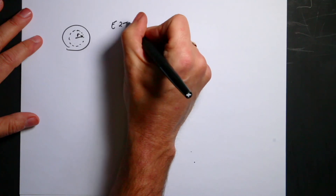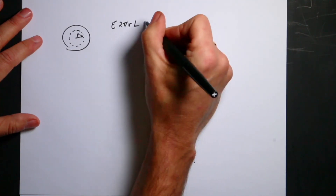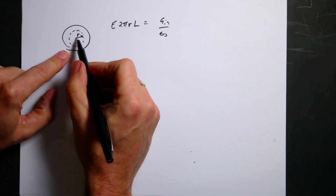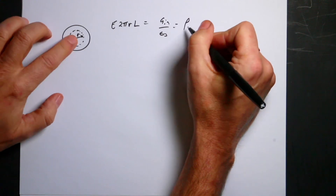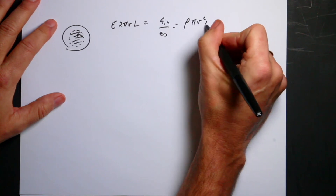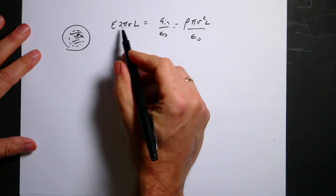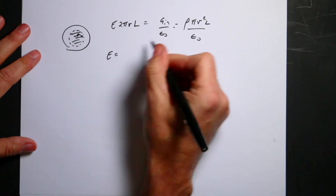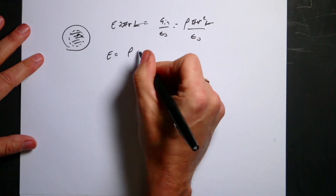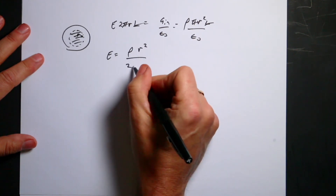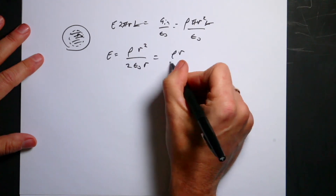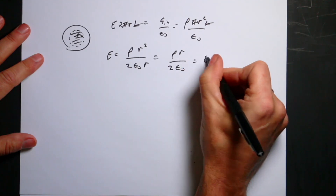The flux on the inside surface is still E times 2πrL, equals Q-inside over epsilon naught. Now Q-inside equals rho times the volume of this smaller cylinder, which is pi*r²*L. Solving for E: the pi's cancel, the L's cancel, and I get rho*r² over 2*epsilon naught*r, which simplifies to E inside equals rho*r over 2*epsilon naught.